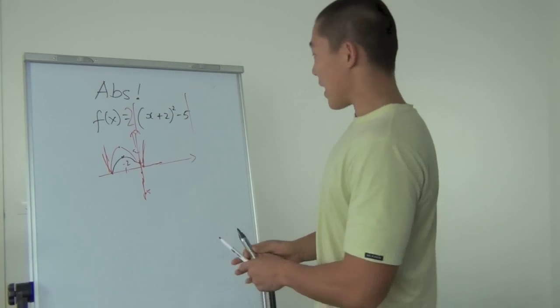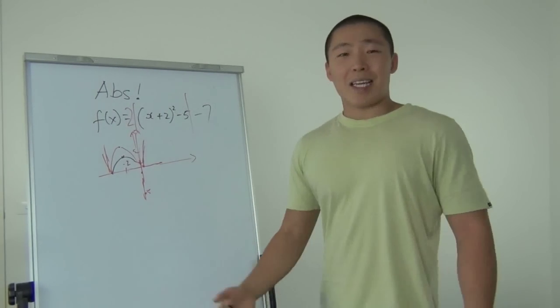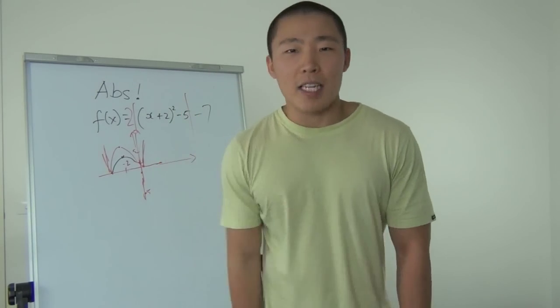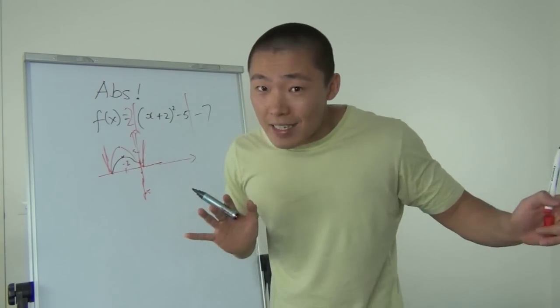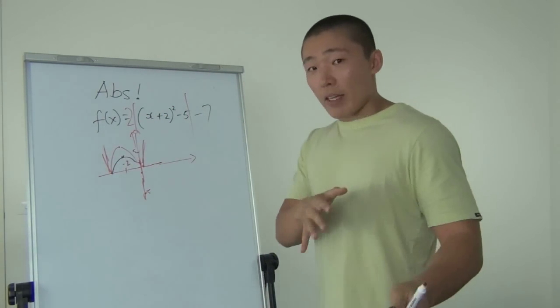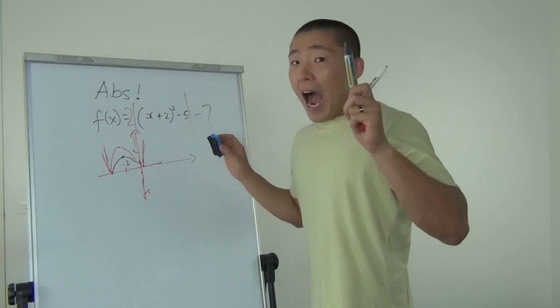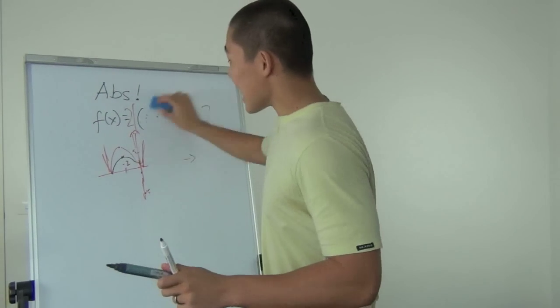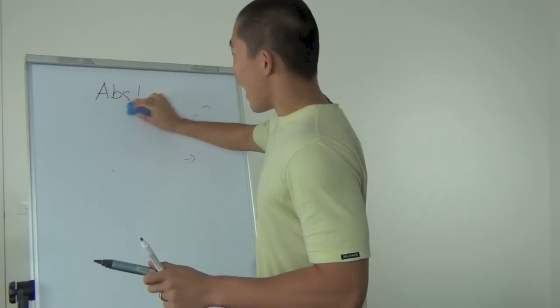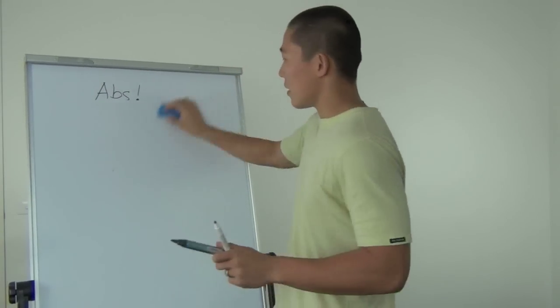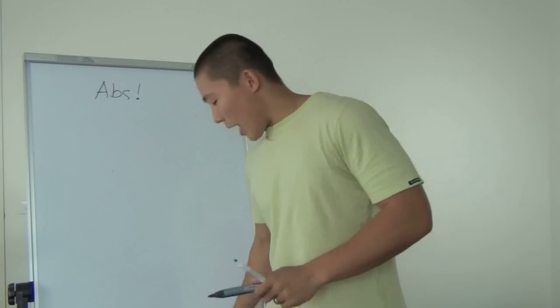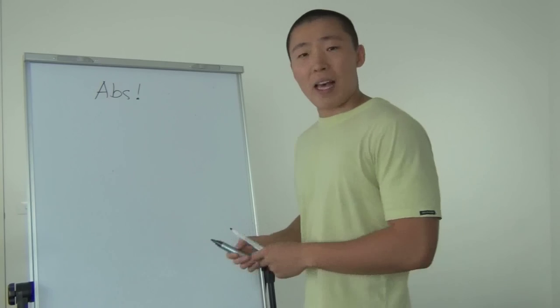And then, you know, as transformations go, if I had a negative 7, guess what happens? Everything moves down 7. It's easy stuff. All right, you get this. I'm going to give you some homework. You better do the homework. All right, Mitchie, you need to do this. This is easy stuff. And if you ever get stuck, just watch this video again because it's super fun to watch math videos on YouTube.